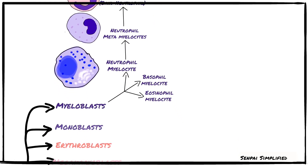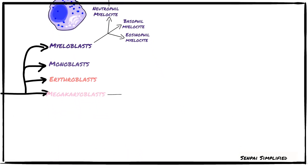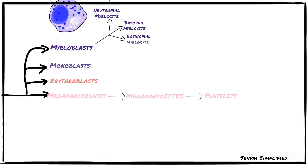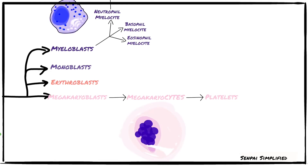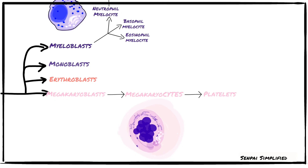Megakaryoblasts develop into megakaryocytes and then into platelets. Megakaryocytes are large cells with a large, irregular, multilobular nucleus and no nucleoli. Their cytoplasm is filled with basophilic granules, and the cells do not have a clear margin.